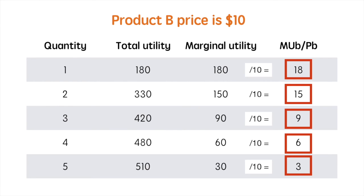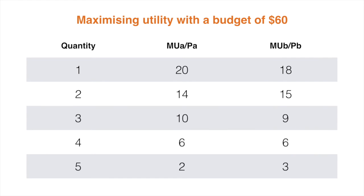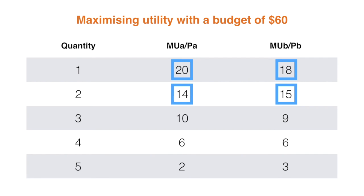Now let's bring both Product A and Product B together, assuming a $60 budget. If I have a budget of $60, I should consume the product that gives me the highest value of marginal utility per dollar. Facing a choice, I will first purchase Product A, as 20 utils per dollar is greater than 18. That will cost me $5. I will then purchase a unit of Product B for $10. Third, I will purchase another unit of Product B for an additional $10. Fourth, I will select Product A at a price of $5. I still have about $30 left, so I will continue to spend.